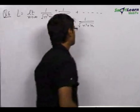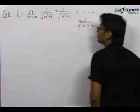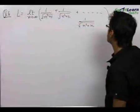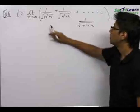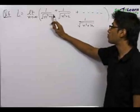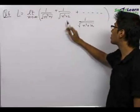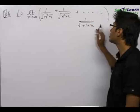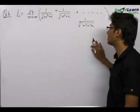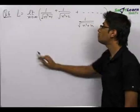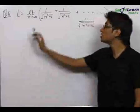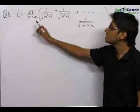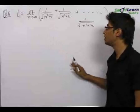In our sixth problem, we are given the sum of a series: 1 upon under root n square plus 1, plus 1 upon under root n square plus 2, plus 1 upon under root n square plus 3, up to 1 upon under root n square plus n. We want to find the limit of this sum as n tends to infinity.